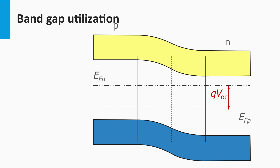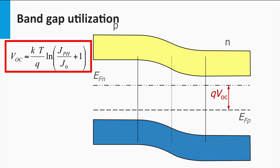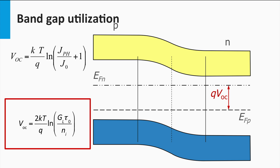Here you see a p-n junction — on the left the p-doped, and on the right the n-doped. Further, we see the quasi-Fermi levels. The extent of splitting between the quasi-Fermi levels determines the open-circuit voltage. Earlier this week we deduced an expression for the open-circuit voltage. The open-circuit voltage depends on the irradiance and the diode leakage current in the dark. This equation can be expressed in terms of the generation rate g, lifetime tau of the minority charge carriers, and the intrinsic density of the charge carriers of the semiconductor material.